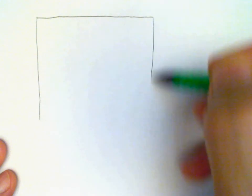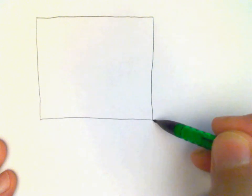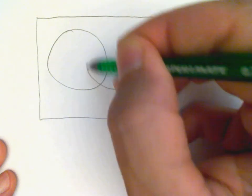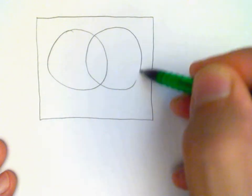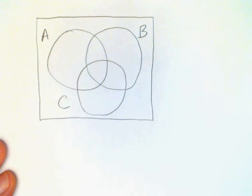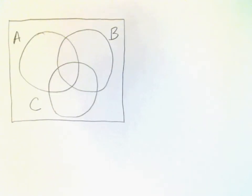For my next example, I'd like to work out an entire 3-set problem, and so I'll go back to using A, B, and C. And let's suppose we're given the following information to work out this problem.